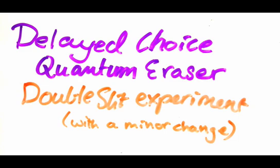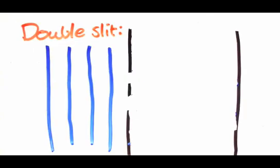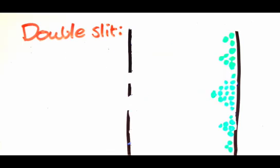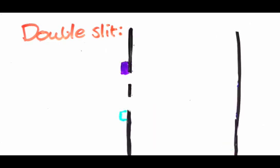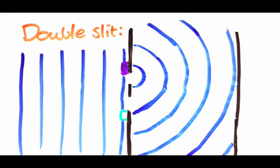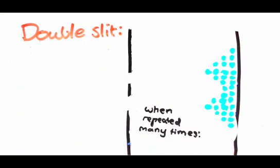We've talked about how in the double slit experiment, a particle will go through both slits and interfere with itself, giving us this pattern. We've also talked about why, if we try to put detectors in to measure which slit the particle went through, it ends up only going through one, causing this pattern instead.